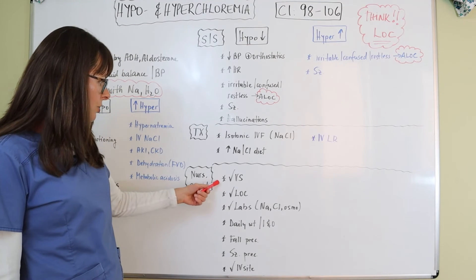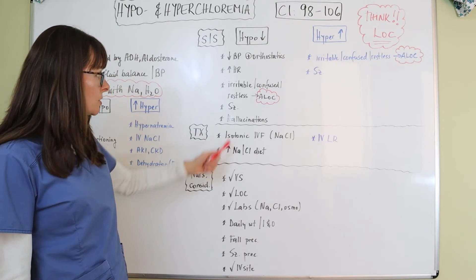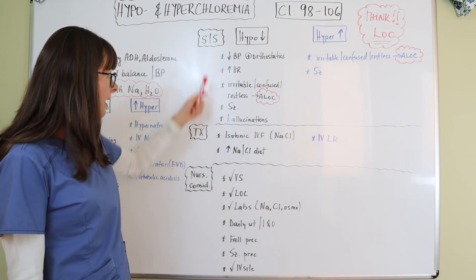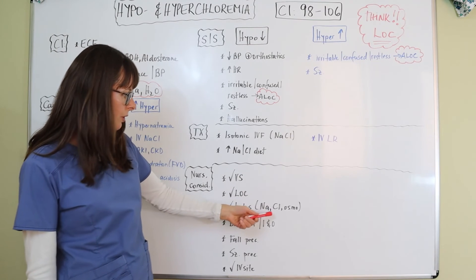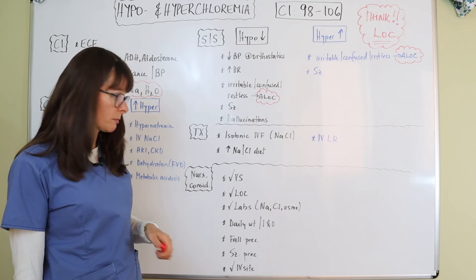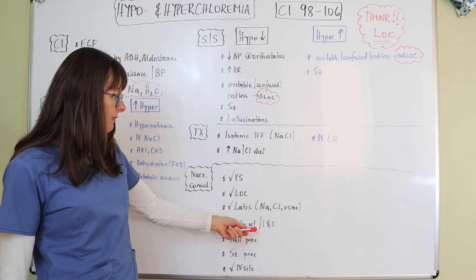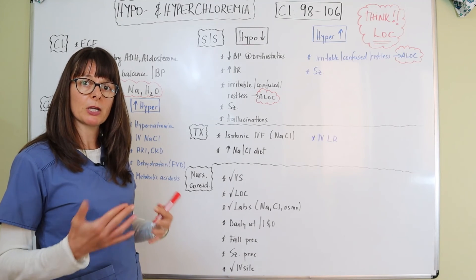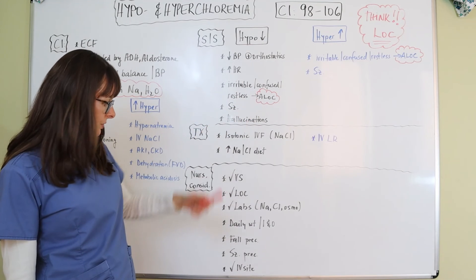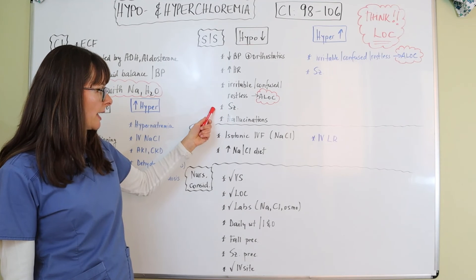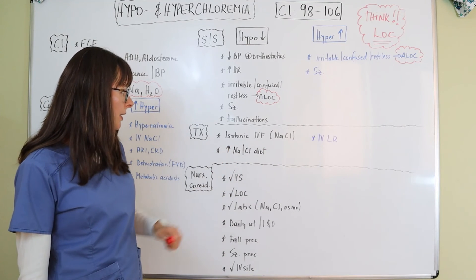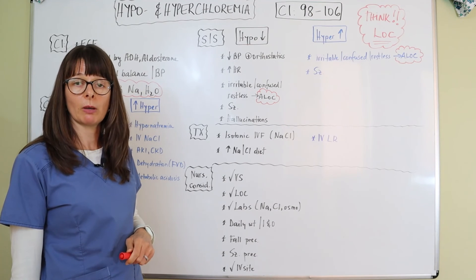For nursing considerations, we want to keep a close eye on vital signs and check the patient's level of consciousness, since it can be altered on both sides. We want to check lab values — sodium, chloride, and serum osmolarity — all values that give us information about the patient's fluid volume status. We want to check daily weights and intake and output to see how much fluid the patient is retaining and how well the kidneys are working. We want to initiate fall precautions because of their altered state, as well as seizure precautions. We also want to check their IV site to make sure treatment is administered to bring chloride back to normal levels.